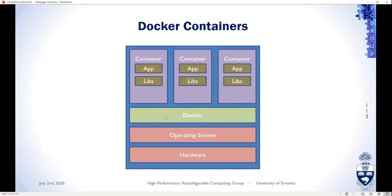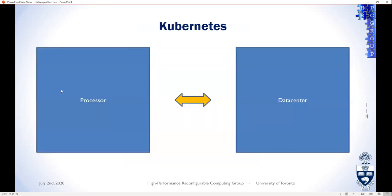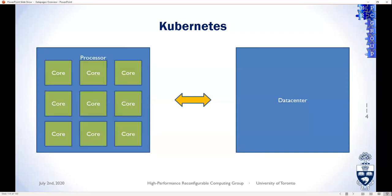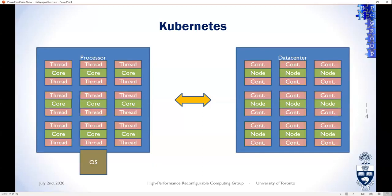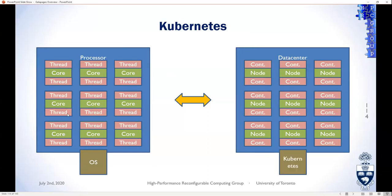Kubernetes manages containers in a data center. An analogy: processors have cores; data centers have nodes or servers. Cores run threads; nodes run containers. An operating system manages and schedules threads on a processor; Kubernetes manages and schedules containers across the data center. They differ in scheduling details, but that's the general idea.